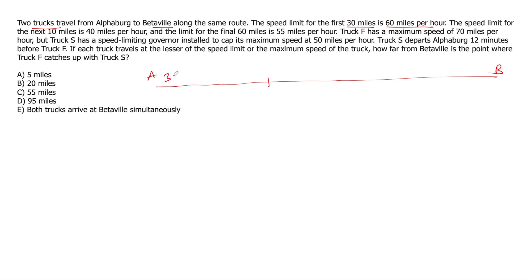First 30 miles, speed limit is 60 miles per hour. Speed limit for the next 10 miles is 40 miles per hour. So next 10 miles, it's 40 miles per hour. And for the final 60, it is 55. So the final 60 miles, it's 55 miles per hour. So the entire route is 100 miles.